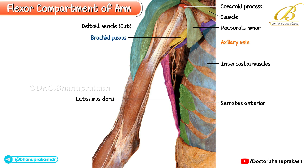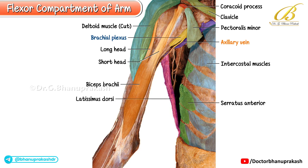The most superficial muscle of the anterior compartment is the biceps brachii. The short head arises from the coracoid process, sharing this origin with the coracobrachialis muscle, while the long head passes through the intertubercular sulcus before joining the short head to form a common muscle belly.